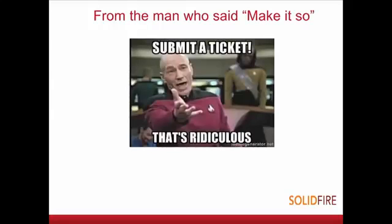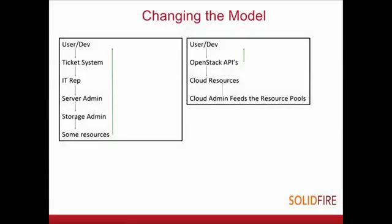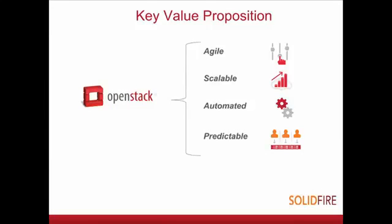With OpenStack and Cinder, we go from this chain of events on the left — submit a ticket, goes to the IT rep, who calls the server admin, who calls the storage admin, who puts together resources and responds — to a user or dev who just uses the OpenStack API, goes to the resource pool, gets what they want, done. Now it's self-serve, immediate response, dynamic, on the fly. You cut out all the middlemen. The key values are agility, scalability, automation, and predictability.